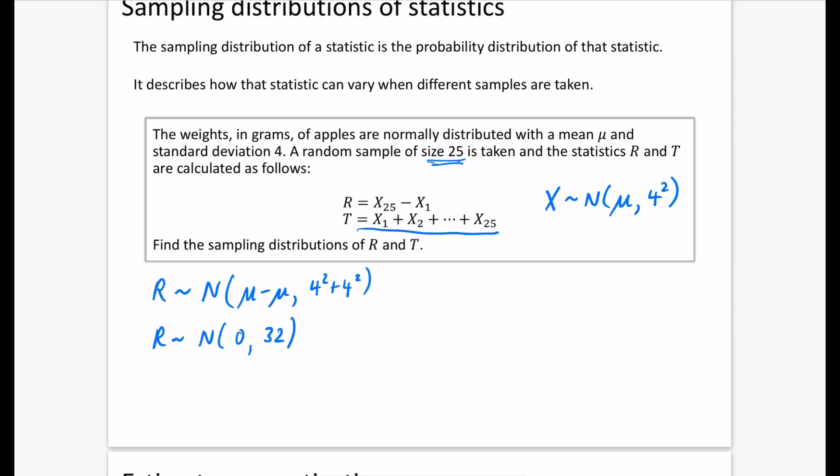For T, which equals x₁ + x₂ + ... + x₂₅, the sampling distribution has 25 of the means being added up. From the previous chapter, this means 25μ for the mean and 25 lots of 4² for the variance. So the sampling distribution for T is N(25μ, 400), which is N(25μ, 20²). We've got these sampling distributions of R and T now.